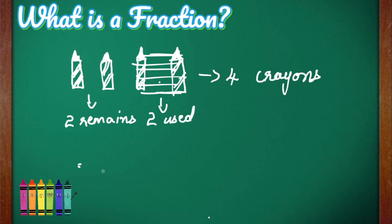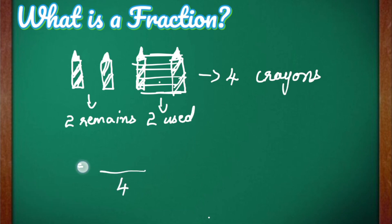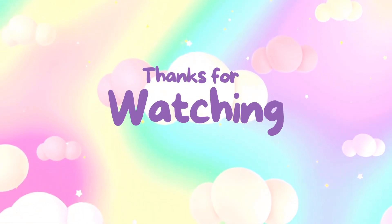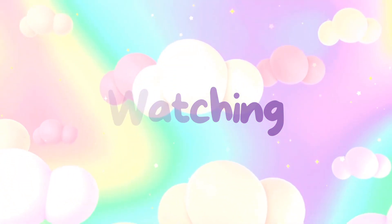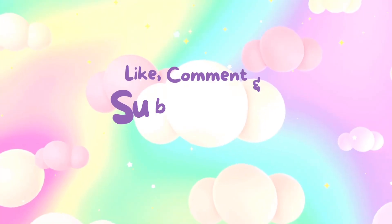To write this in the form of numbers, we write it as 2 by 4, which is a fraction. The total number of crayons, which is 4, is written in the denominator, and the number of crayons used, which is 2, is written in the numerator. So it becomes 2 by 4. A fraction is nothing but a part of a whole — remember, parts should be equal. Thank you for watching.